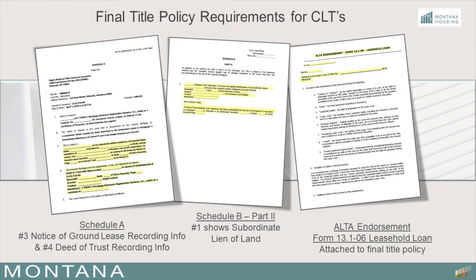Next, the title policy when issued must expressly confirm several key items. On Schedule A under No. 3, which is for vesting of the title, is the recording information of either the complete community land trust ground lease between the lessor and lessee or a notice of leasehold interest giving public notice of the lease. Schedule A number 4 for the insured mortgage and its assignments is the recording information of the first position deed of trust on both the leasehold estate and the improvements. Schedule B part 2 should have the recording information of the permitted mortgage agreement, including the MBOH community land trust rider, both attached to the full lease or the notice of leasehold interest. There should not be any related CLT ground lease occupancy and resale restrictions, covenants or agreements that run with the land and have been recorded apart from the ground lease, except as may be permitted under the MBOH community land trust rider.